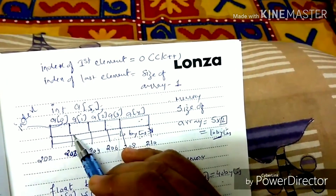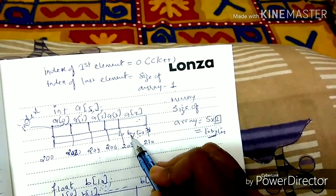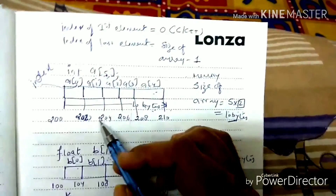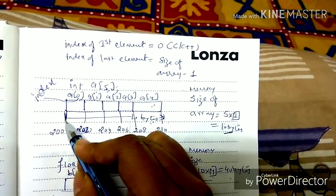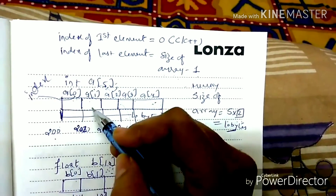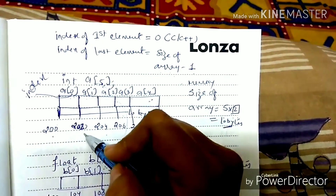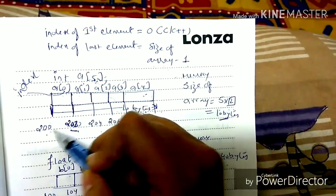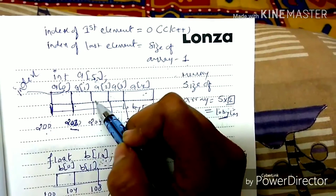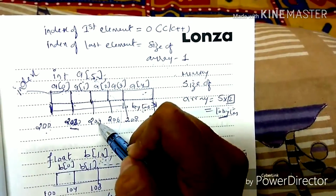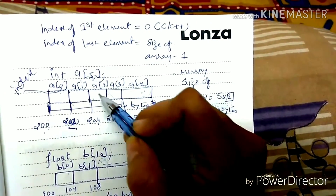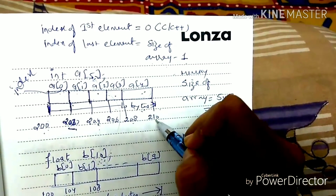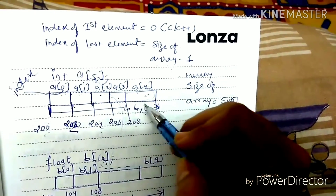Now, the memory of 10 bytes is contiguous memory allocation. Contiguous memory allocation means if the first element is at memory address 200, then the second element will be at 202. Why? Because 1 integer takes 2 bytes, so the difference is 2 bytes. Then 204, 206, 208 and so on.